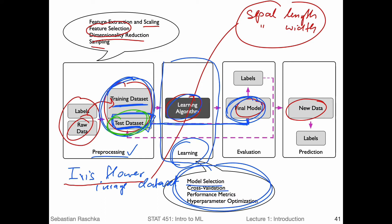That works like this: we use the model to predict labels — these labels are the labels predicted for the test set — and then we compare to the true labels of the test set. After we evaluate our model, in a classification example we usually use the classification accuracy or classification error. For example, we can say we get 95% accuracy in terms of classifying the flowers correctly. After we evaluated the model, we can then use it on new data for real-world predictions. This slide may be a little bit confusing at this point with a lot of information, but we will cover these individual steps in way more detail later in this course.